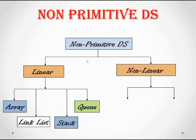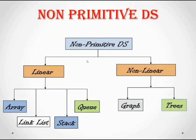Now we move to non-linear data structures, which are classified into two types: graph and tree. In a graph, elements are stored in a pictorial representation and are connected by links called edges. In a tree, we have a multi-level data structure with hierarchical relationships among elements, and each element is represented as a node.